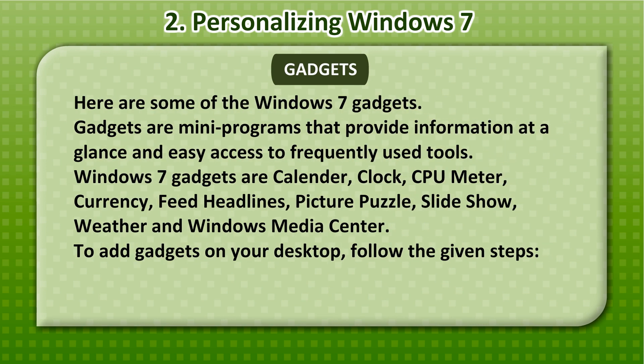Gadgets: Here are some of the Windows 7 gadgets. Gadgets are mini programs that provide information at a glance and easy access to frequently used tools. Windows 7 gadgets include Calendar, Clock, CPU Meter, Currency, Feed Headlines, Picture Puzzle, Slideshow, Weather and Windows Media Center.